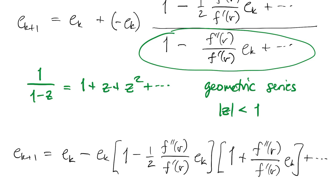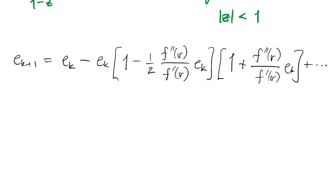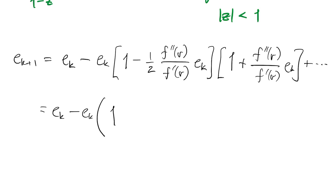With the understanding we've left out a bunch of stuff with higher powers of ek. Now I can multiply these together. Again, just keeping the highest order stuff.